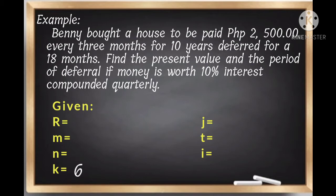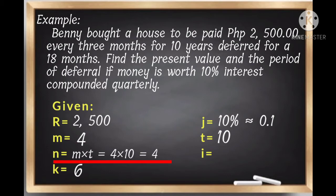These are the given values. The regular payment R is 2,500 pesos. J equals 10%, or 0.1. M is 4, T is 10. To find the number of payments, we multiply M and T. 4 times 10 equals 40.